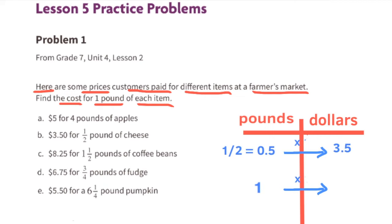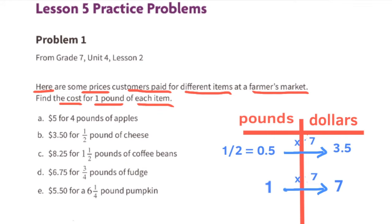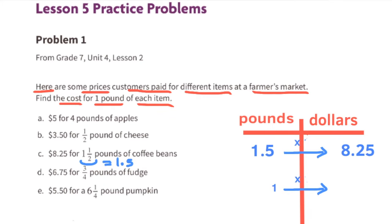Part b: three dollars and fifty cents for a half a pound of cheese. A half a pound times two equals one full pound, and three dollars and fifty cents times two equals seven. So one pound of cheese costs seven dollars.